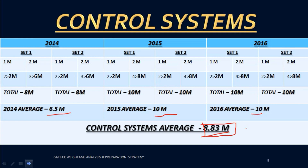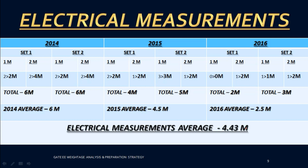Electrical Measuring Instruments is a core electrical subject but has the least weightage at 4.43 marks. If you want to improve your rank, concentrate on it, but if you are in the final days with only one month left, you can ignore it. The yearly averages were around six, 4.5, and 2.5 marks. For 2017 you can expect around four marks from this subject.